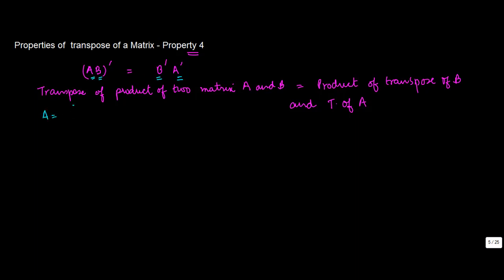Let's say you have A equals [1, 2; 3, 4], and you have B equals [5, 6; 7, 8]. Now for these two values, let's try to see if this property holds true.